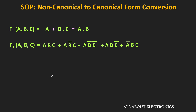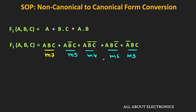Each product term contains all the variables of the function, so the expression is in canonical form. Moreover, each product term is a minterm: A·B·C corresponds to m7, A·B·C̄ corresponds to m6, A·B̄·C corresponds to m5, A·B̄·C̄ to m4, and Ā·B·C to m3. The output is the summation of all these minterms, which can be written in abbreviated form.